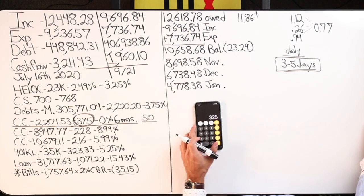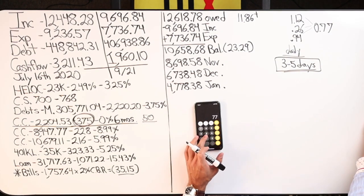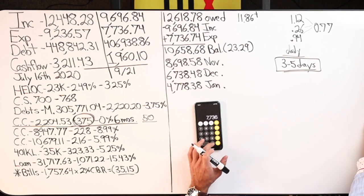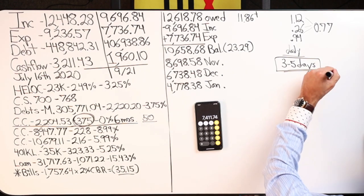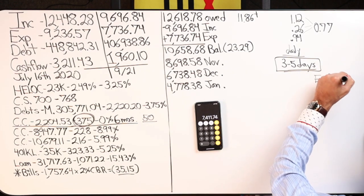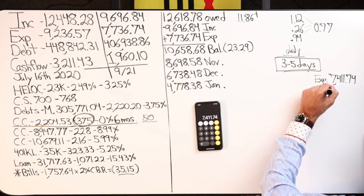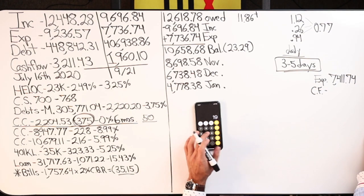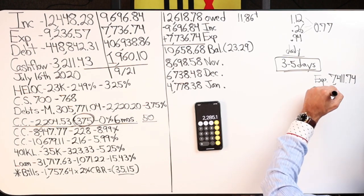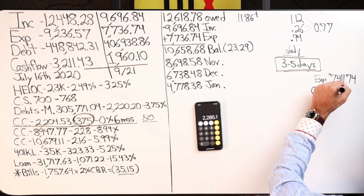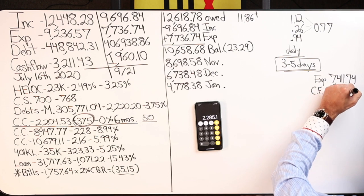Ladies and gentlemen, what occurs when I do that? Well, $7,736.74 minus $325. My expenses now drop to $7,411.74. Cash flow increases by the same amount of number, $1,960.10 plus $325. Now I'm at $2,285.10.